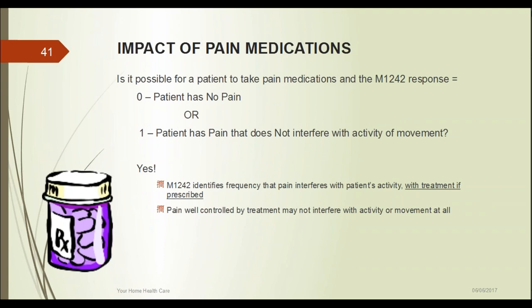Regarding impact of pain medications: it is possible for a patient taking pain medications to score zero on M1242 — if they're constantly on pain medicine and it works, they may have no pain, which is the goal. This is how we can help improve our patient's pain scores: if a patient has frequent pain but is only on PRN medication, they may need to be put on a scheduled pain medication. Once they're on a scheduled medication and no longer have pain, their pain score improves. So yes, a patient can be on pain medications and still score a zero.